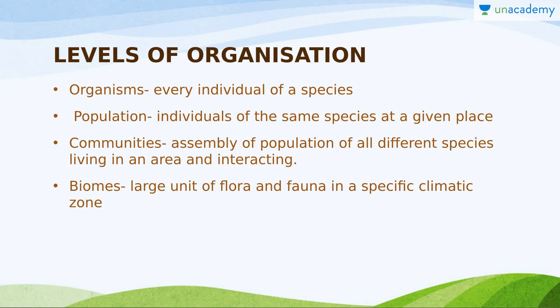Organisms are the very first level — every individual of a species is an organism. Then some organisms that live together form a population. Some populations living together and interacting with each other form a community. A large unit of flora and fauna in a specific climatic zone is called a biome.